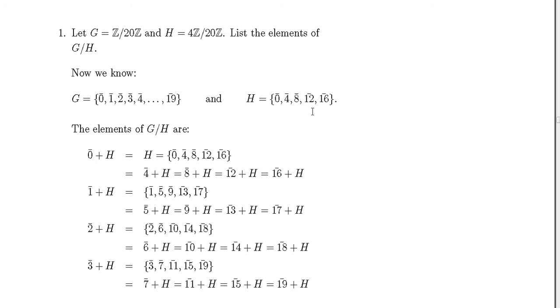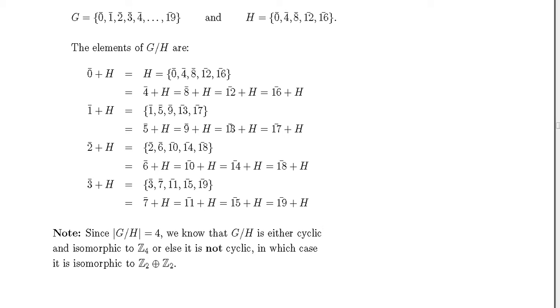Okay, so the elements are listed. We have the elements of the division group G/H. Now that we have the list, since the order of the division G/H is 4, we know that G/H is either cyclic because it's order 4 and isomorphic to Z4.